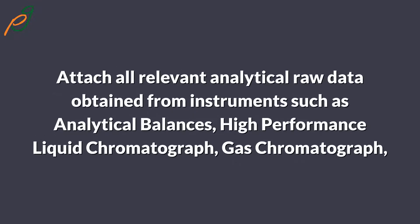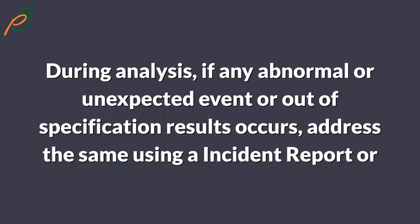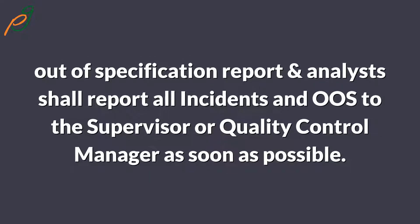Use clean spatulas or butter papers for transferring and weighing samples. Attach all relevant analytical raw data obtained from instruments such as analytical balances, HPLC, GC, UV spectrophotometer, IR spectrophotometer, polarimeter, refractometer, potentiometer, and bulk density apparatus to the record of analysis and calculation sheet. During analysis, if any abnormal, unexpected event, or out-of-specification (OOS) results occur, address the same using an incident report or OOS report, and analysts shall report all incidents and OOS to the supervisor or quality control manager as soon as possible.